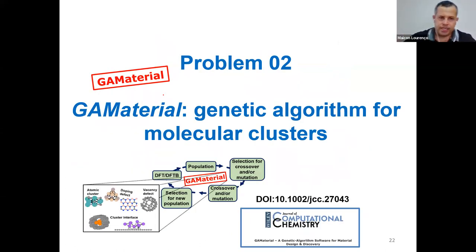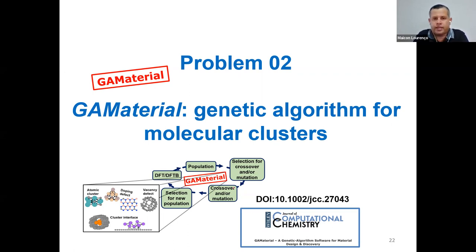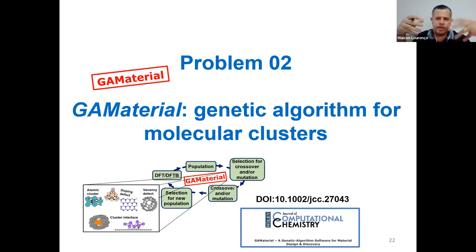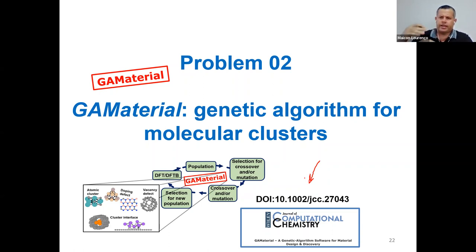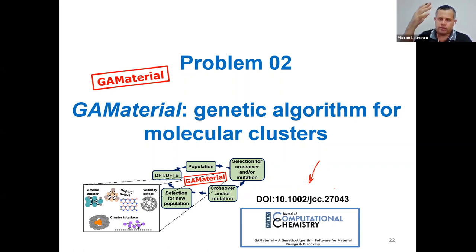Now we have Problem 2, which is the GA Material for genetic algorithms, particularly for molecular clusters. GA Material is a genetic algorithm software for material design and discovery — a broader companion to QML Material, drawing inspiration from active learning and GA. This work is in final editing for publication with a DOI already assigned. The publication covers molecular clusters and vacancies/doping, and includes many features I'll show shortly. The already-published work covers atomic clusters and defects at interfaces; molecular clusters are in progress for another work.